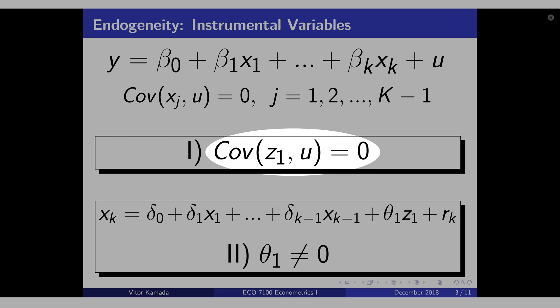But there is a benefit in calculating the covariance between z and the u-hat. Because if this covariance is different than zero, you know that you are in trouble. But if z is uncorrelated with u-hat, this does not imply that covariance between z and the error term equals zero.